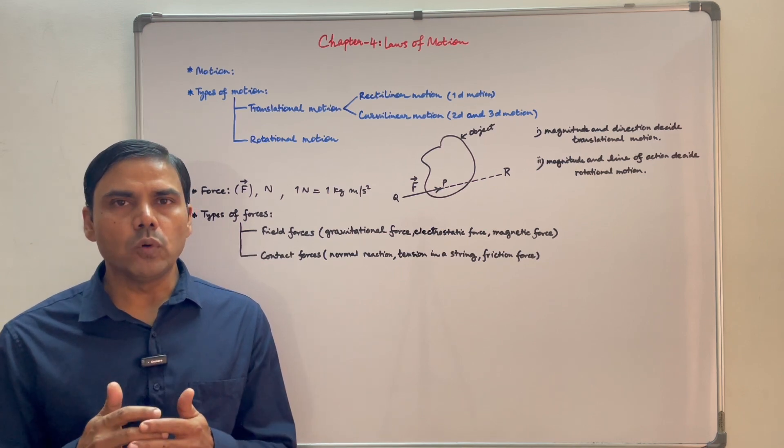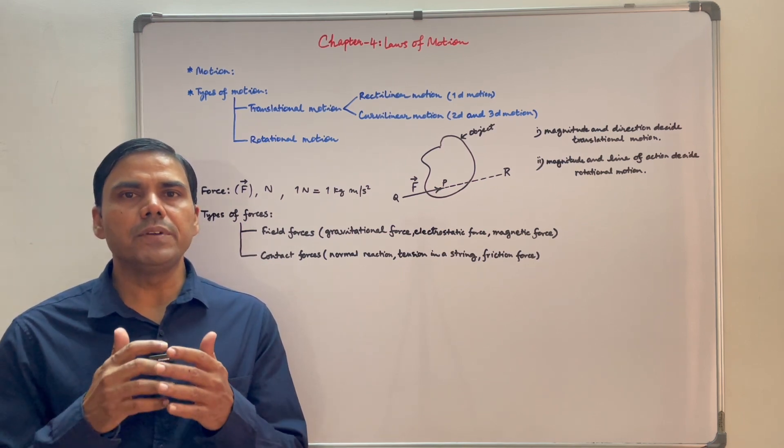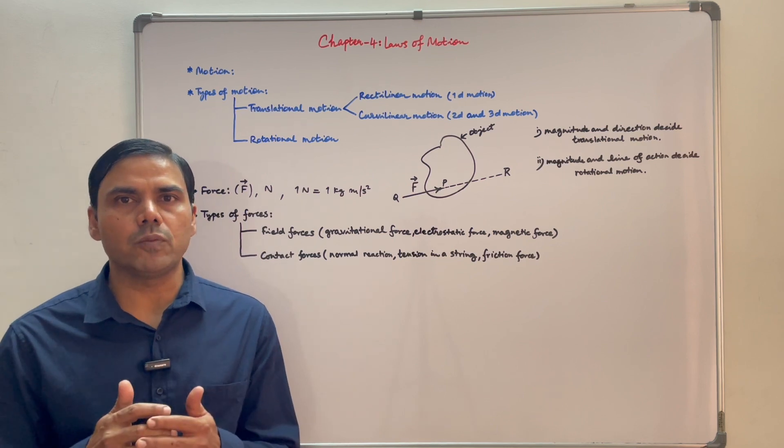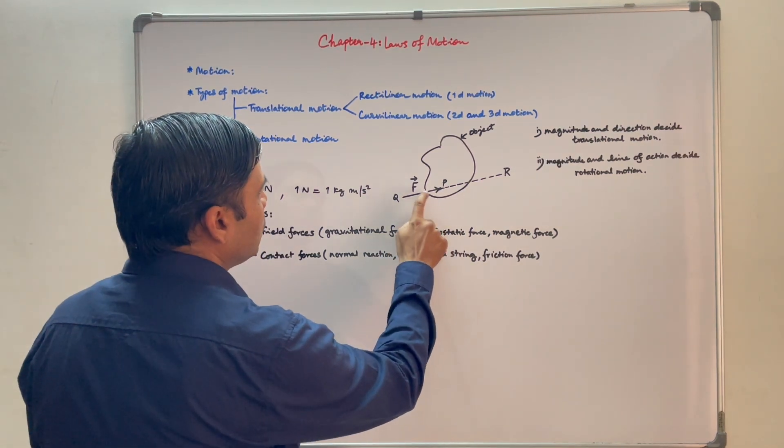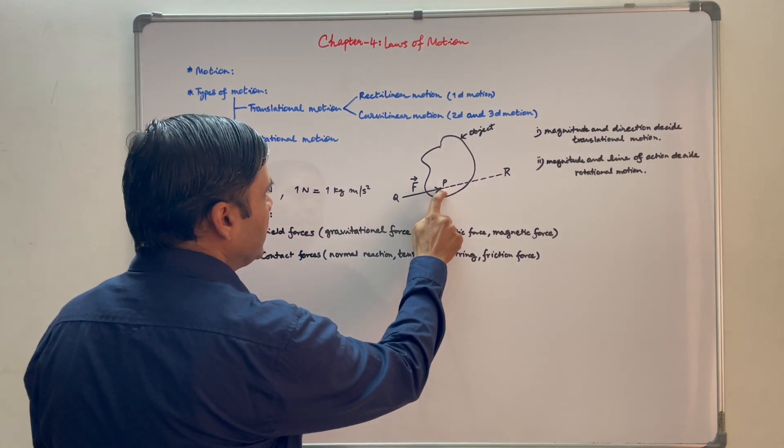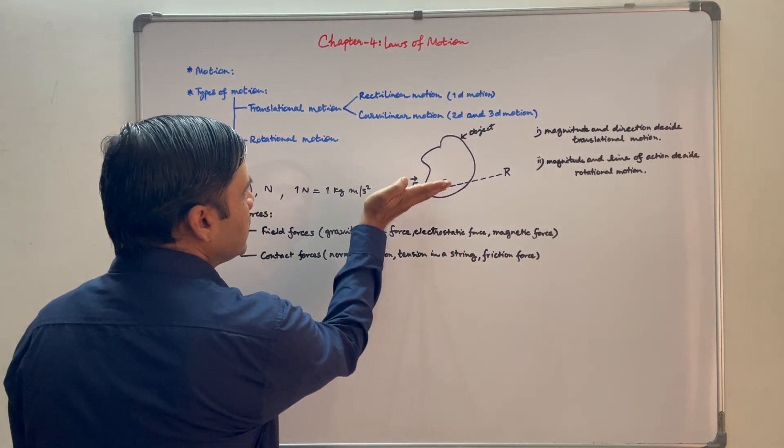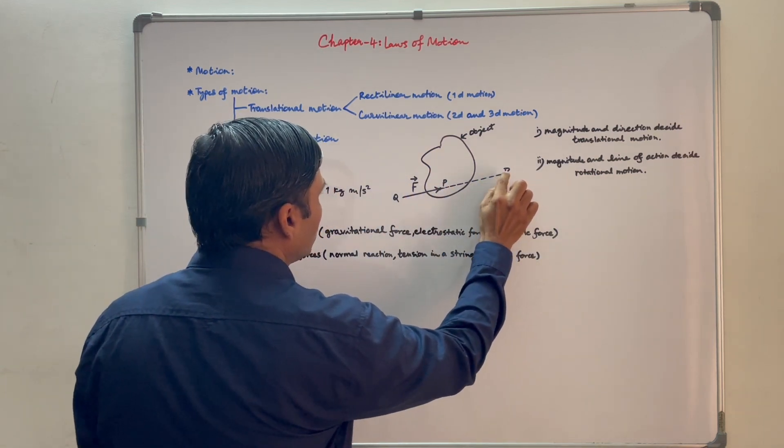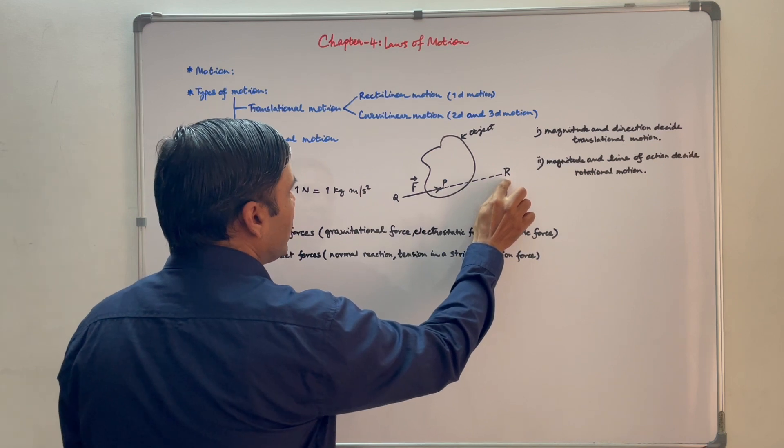To predict how a force affects the motion of an object, we need to know magnitude, direction and point of application of force. Consider this is an object. A force F is applied at point P. So P is point of application of force. Direction and point of application of force decide line of action of force. So QR is line of action of force.